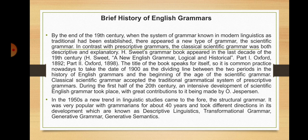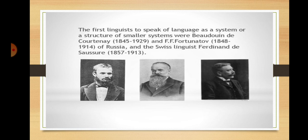Classical scientific grammar accepted the traditional grammatical system of prescriptive grammars. During the first half of the 20th century, an intensive development of scientific English grammar took place, with great contributions being made by Otto Jespersen. In the 1950s, a new trend in linguistic studies came to the fore — structural grammar. It was popular for about 40 years and took different directions known as descriptive linguistics, transformational grammar, generative grammar, and generative semantics. The first linguists to speak of language as a system or structure of smaller systems were Baudouin de Courtenay and Fortunatov of Russia and the Swiss linguist Ferdinand de Saussure.